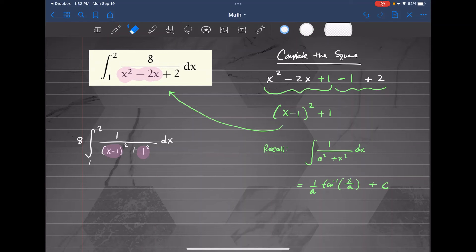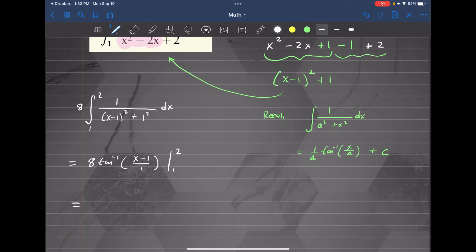So I'm going to go ahead and I realize that this is tangent inverse. So I'm going to say that this is equal to 8 times tangent inverse of x minus 1 over a is 1. And we're going to evaluate it from 1 to 2. So that's what this looks like. And we don't want to write x minus 1 over 1. So I just clear that up. So this is 8 tangent inverse of x minus 1 going from 1 to 2.